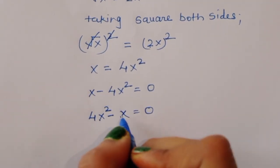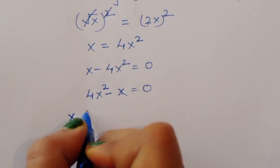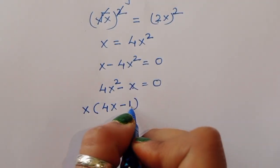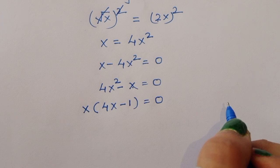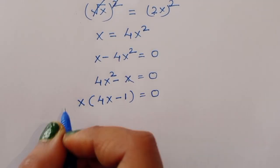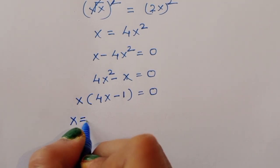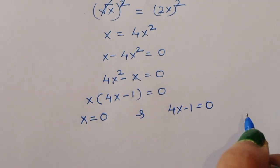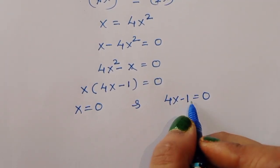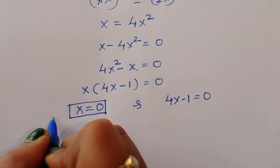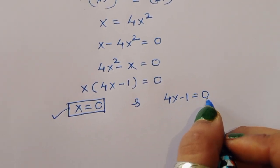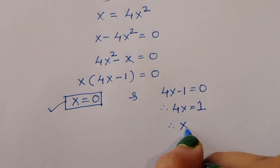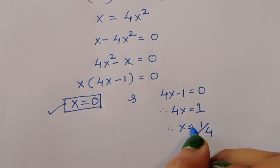Taking x common: x times (4x minus 1) is equal to 0. So we have two solutions: x is equal to 0 (first solution), and 4x minus 1 is equal to 0 (second). From the second equation, 4x is equal to 1, therefore x is equal to 1 by 4.